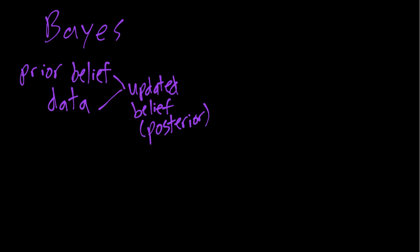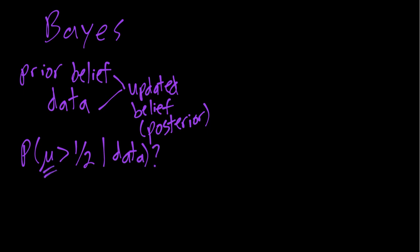Given our updated belief, we can ask questions like: what do I believe is the probability that the true mean is bigger than one-half? This is often written in notation that can be sometimes a little confusing — something like the probability that mu, the Greek letter mu which usually represents a mean, is greater than one-half, conditional on the data that we observed. But to clarify, this mu is not really representing the true population value; it's really representing our belief about the true value. So this is a probability with respect to our new posterior belief.